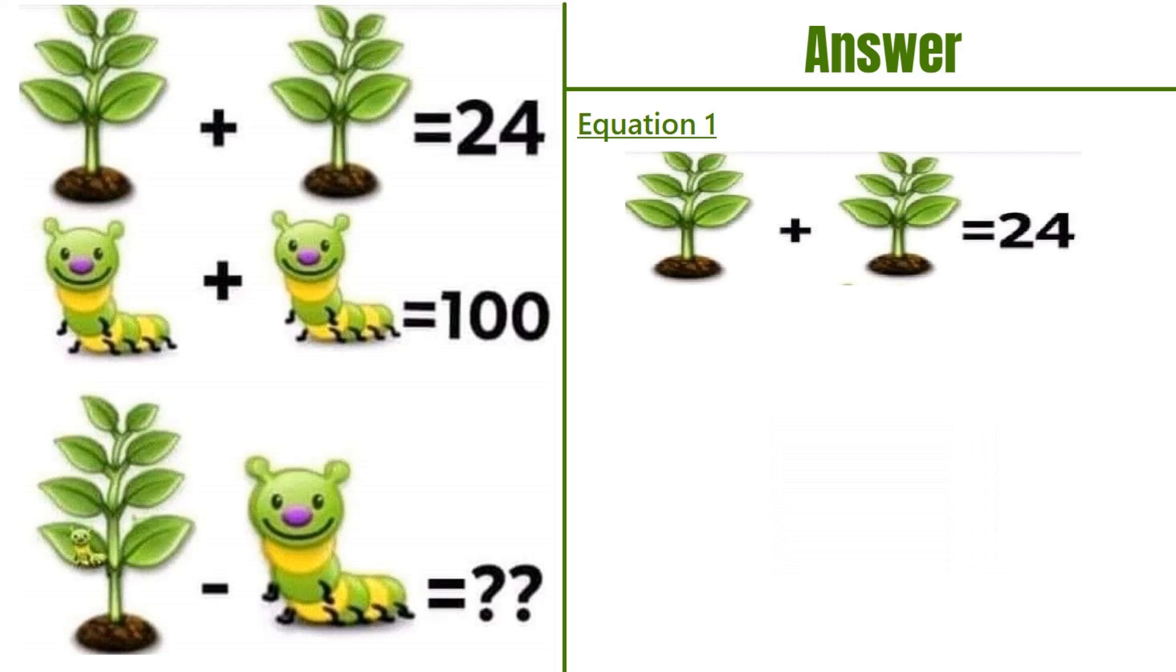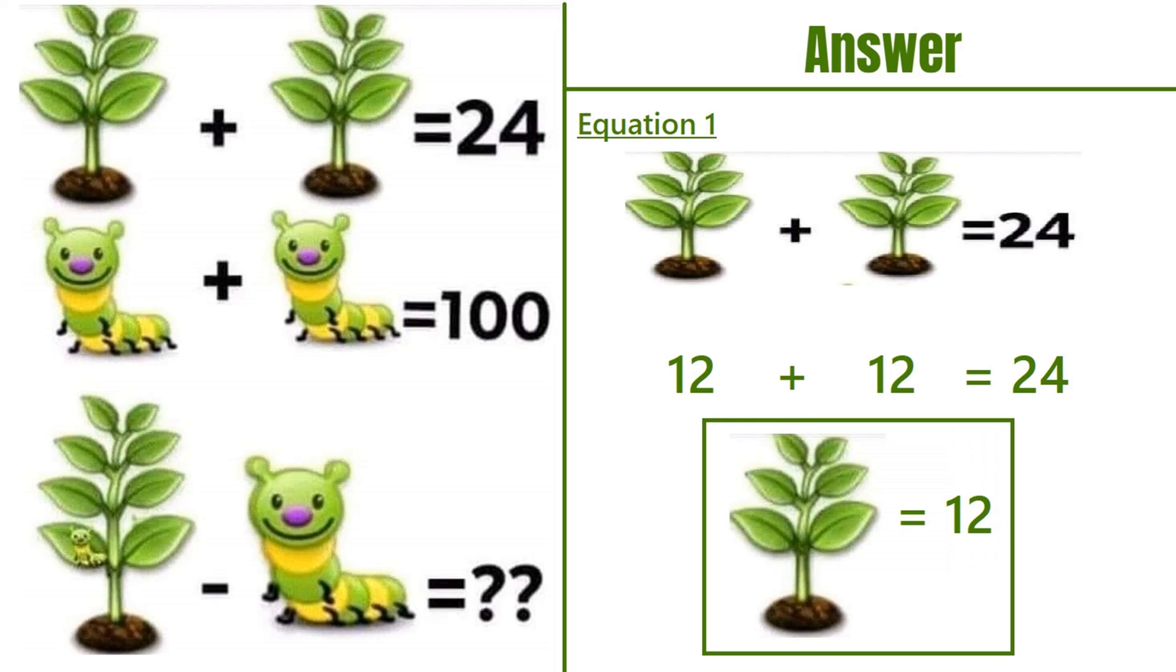Let's check equation number 1, which says a plant plus a plant equals 24. 12 plus 12 equals 24, so a plant with 6 leaves equals 12.